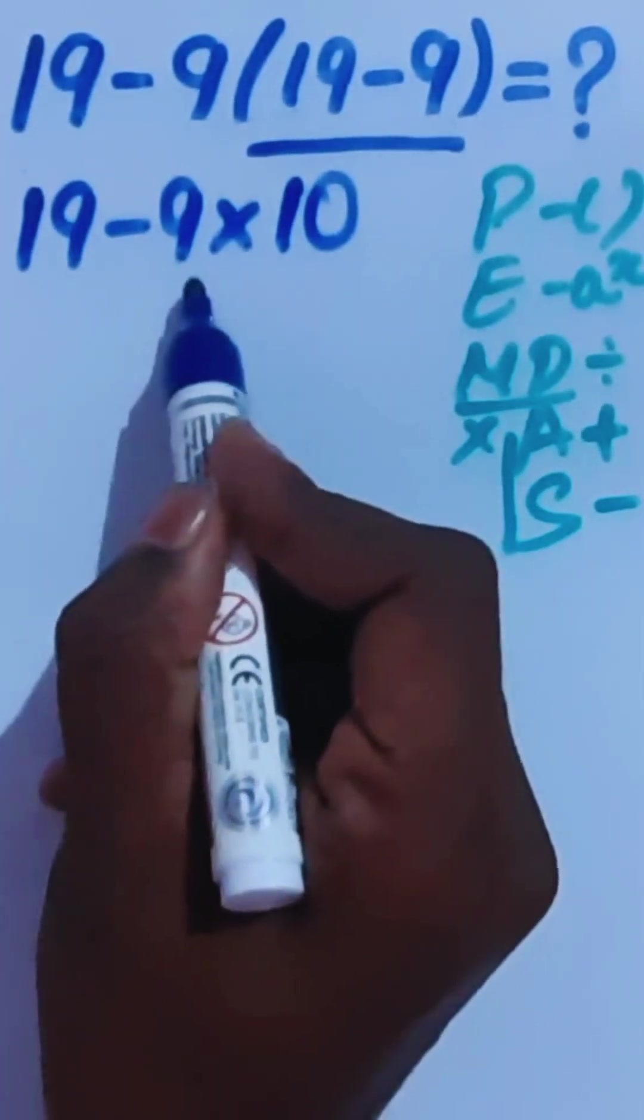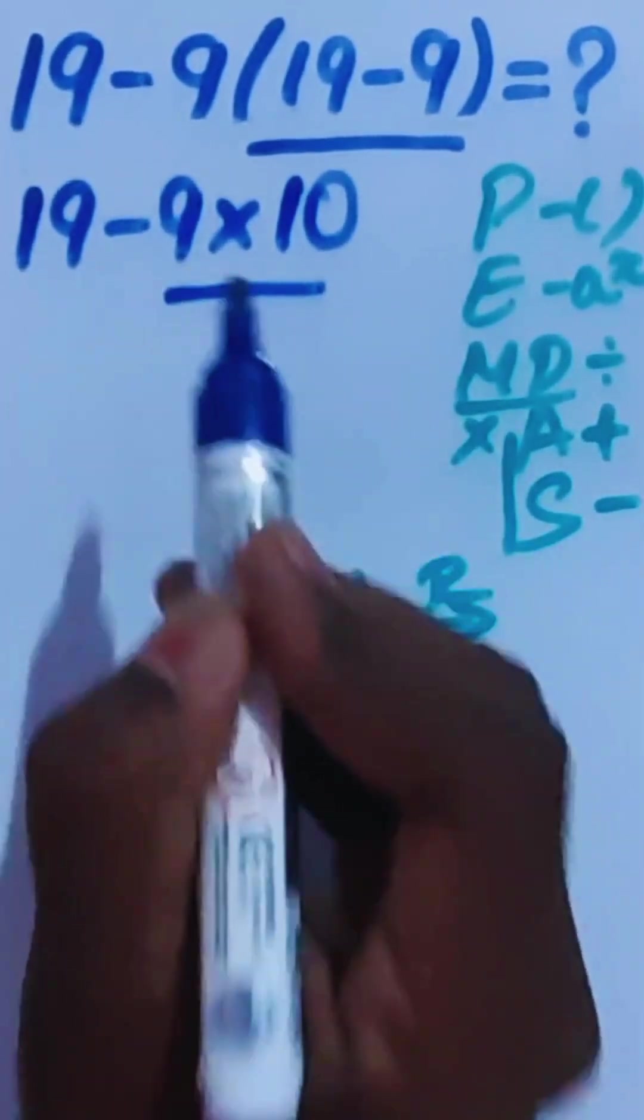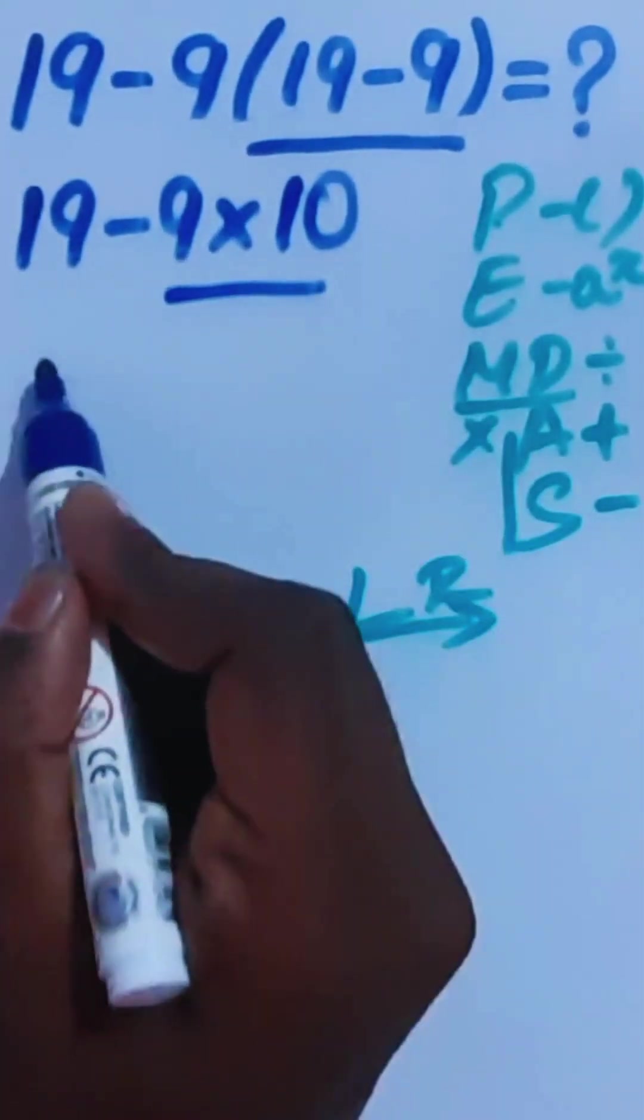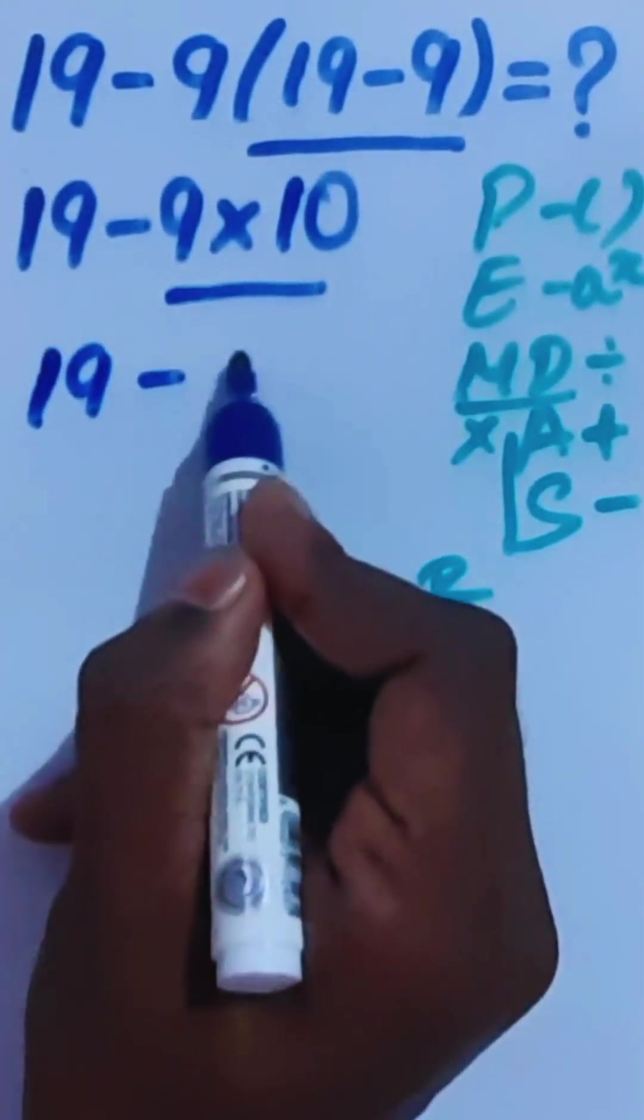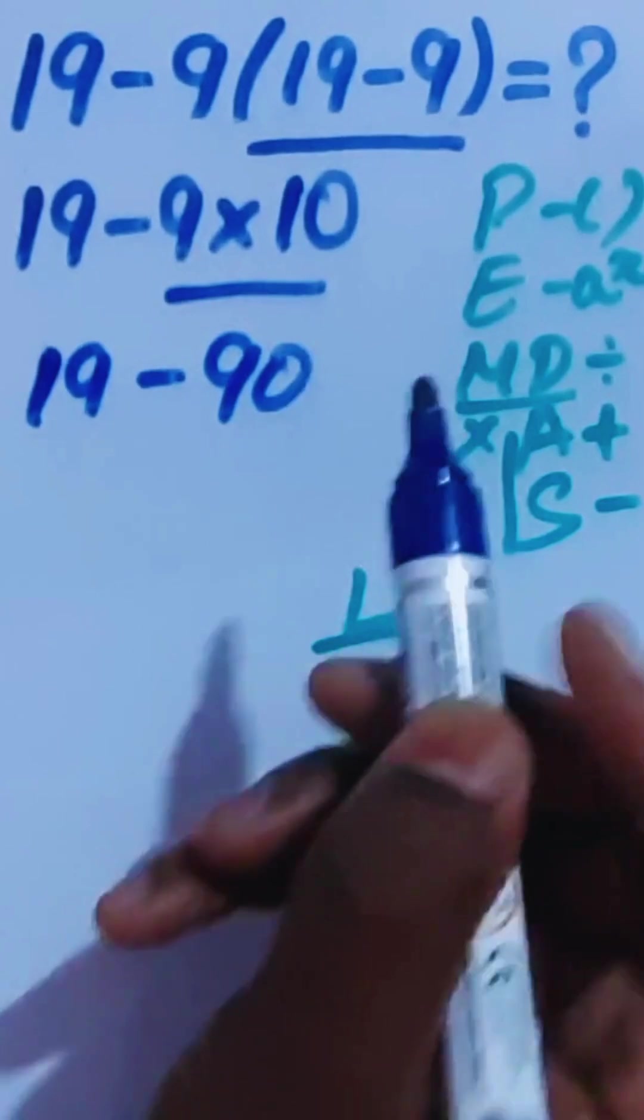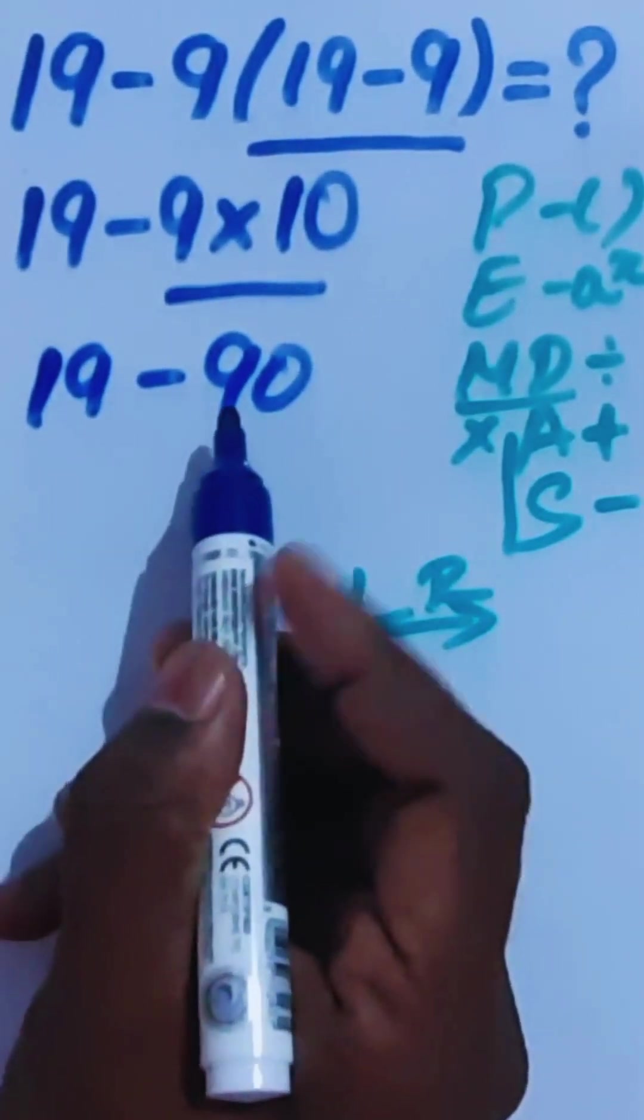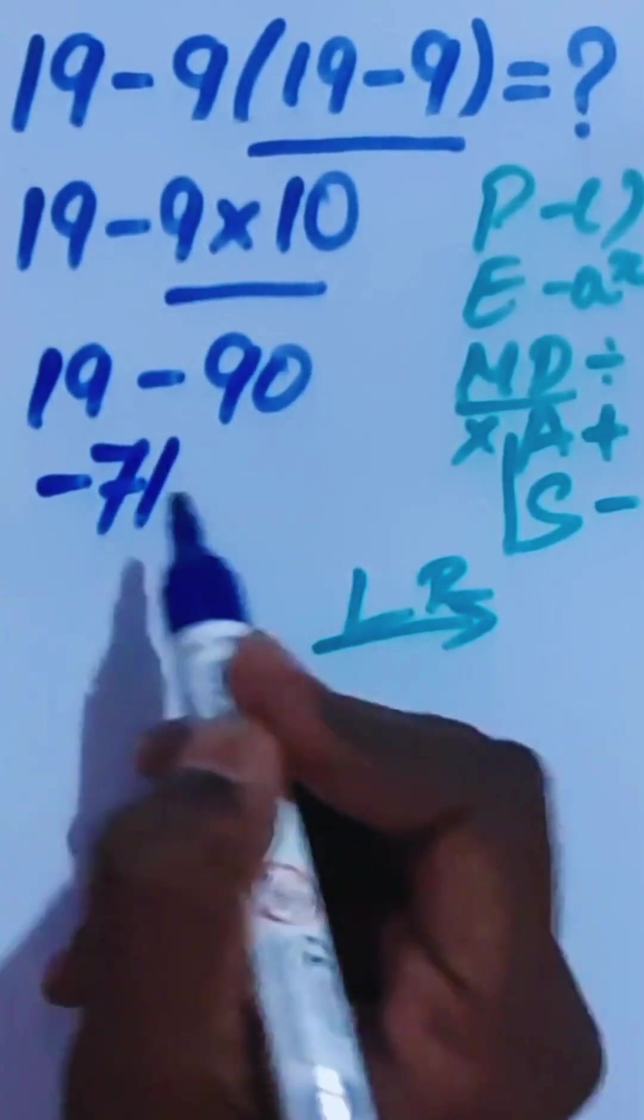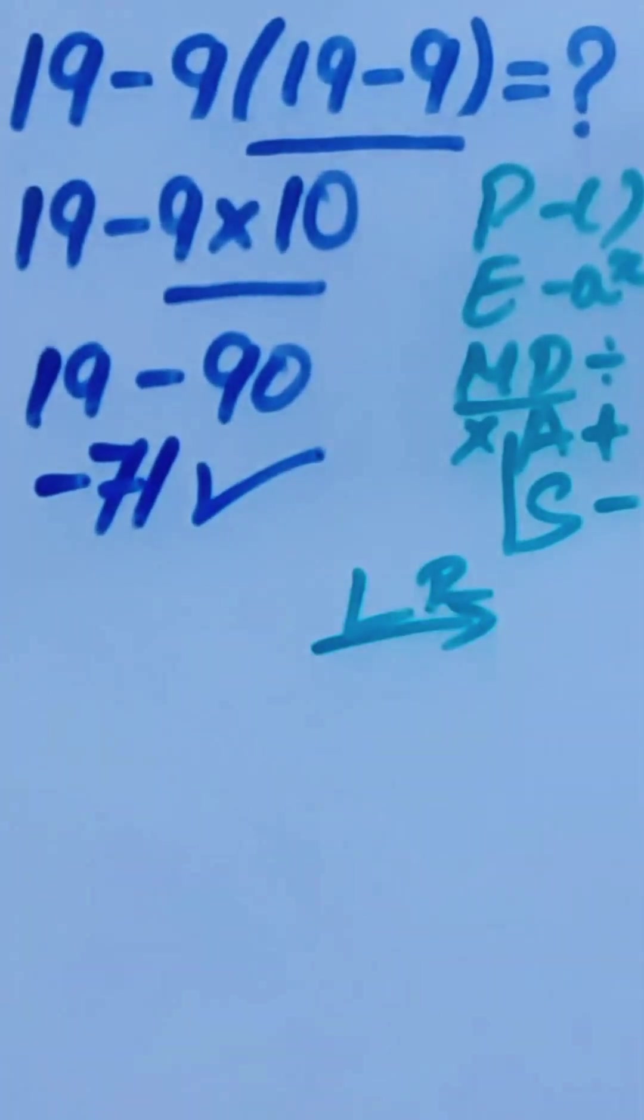Now, we have subtraction and multiplication. Multiplication is higher priority than subtraction. So, we have to do 9 times 10. So, 19 minus 90. Here, 19 minus 90 is negative 71. This is the correct answer.